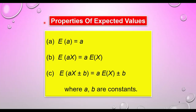Properties of Expected Values. A: the expected value for a constant a is equal to a. B: the expected value for a·X is equal to a·E[X]. C: the expected value for aX plus or minus b is equal to a times E[X] plus or minus b, where a and b are constants.